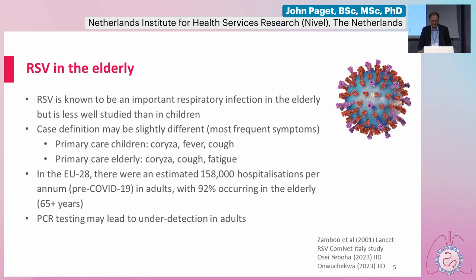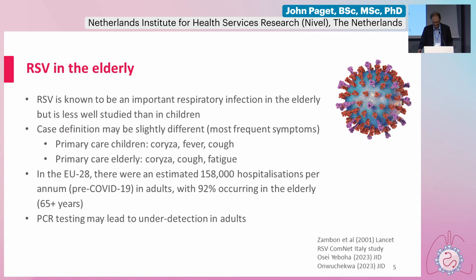We've just done a study looking at the burden of RSV in adults, where we calculated the number of hospitalizations in the EU and UK. We calculated there were roughly 160,000 hospitalizations per annum pre-COVID, with 92% of those occurring in the elderly — so over 65. Another important point is that PCR testing may lead to under-detection of RSV cases in adults and the elderly, and there's a good review on that in JID. The suggestion is to extend to sputum and serology to get the best detection in the elderly.